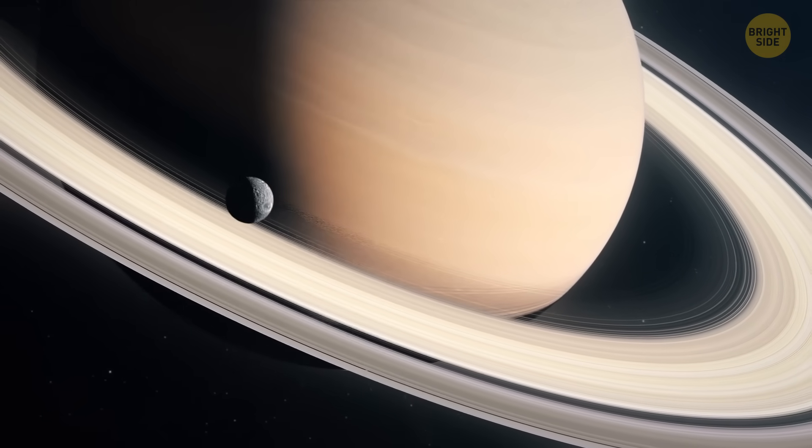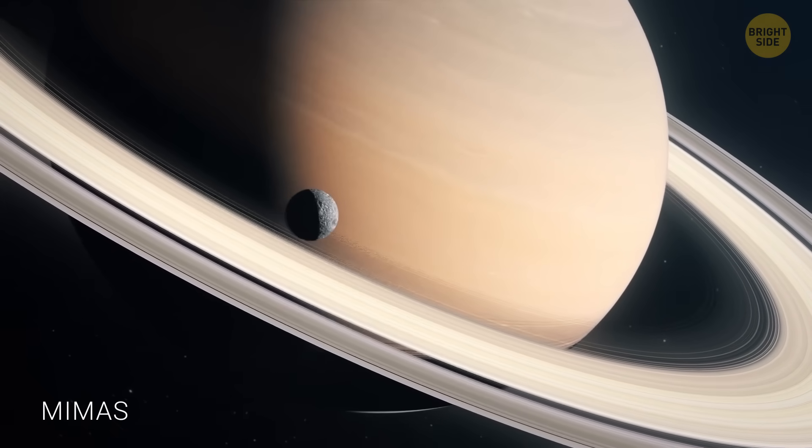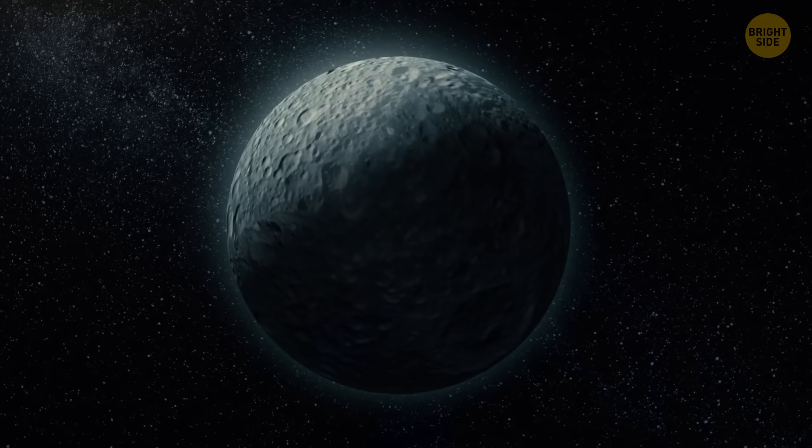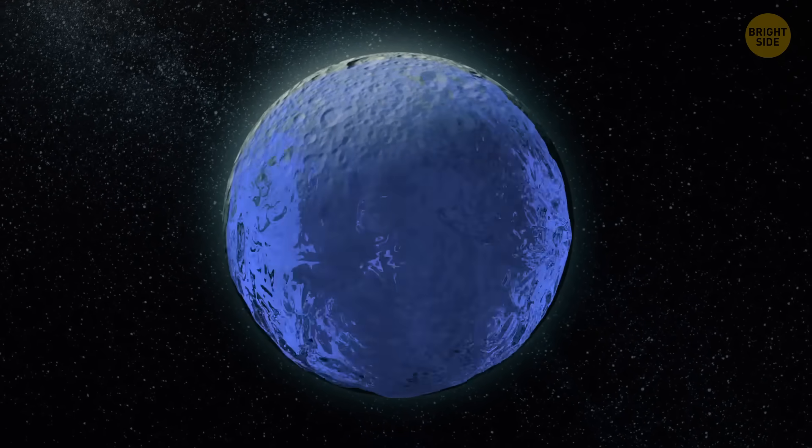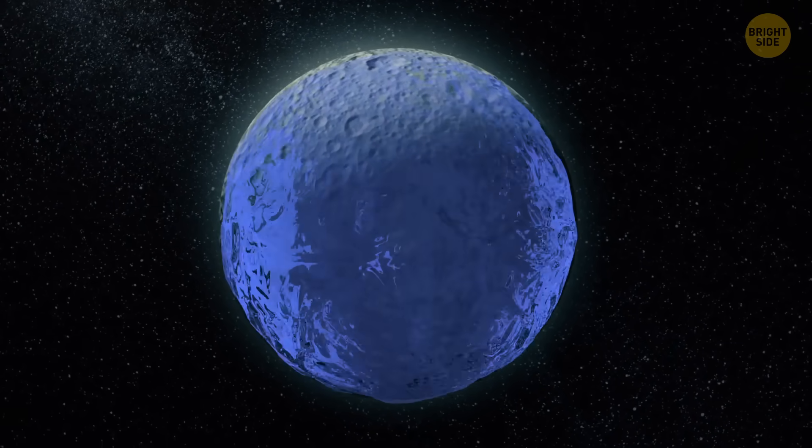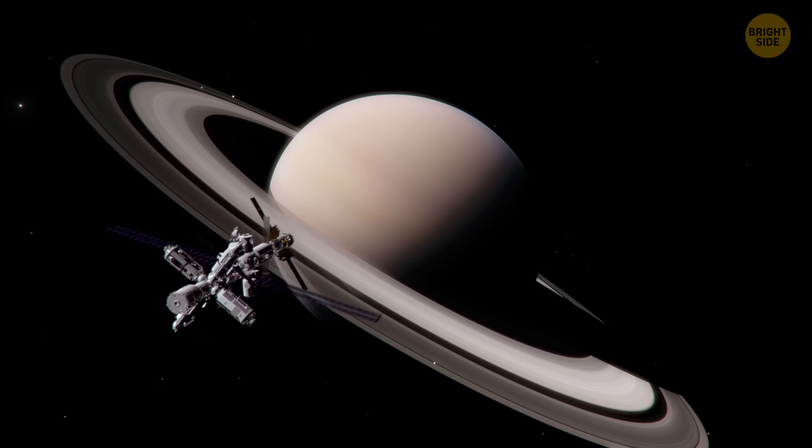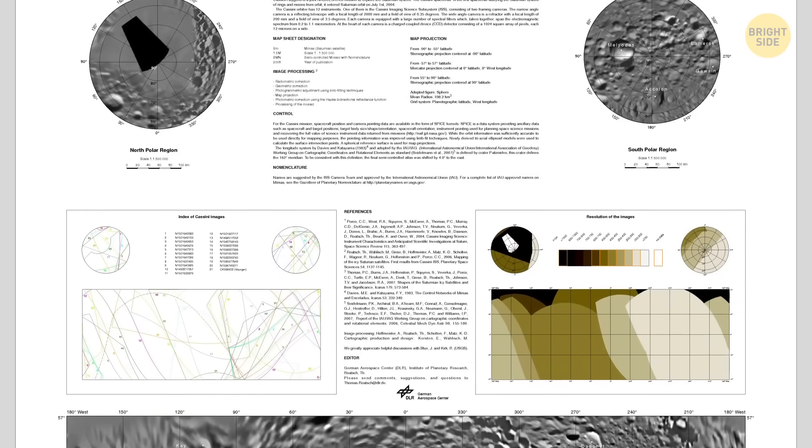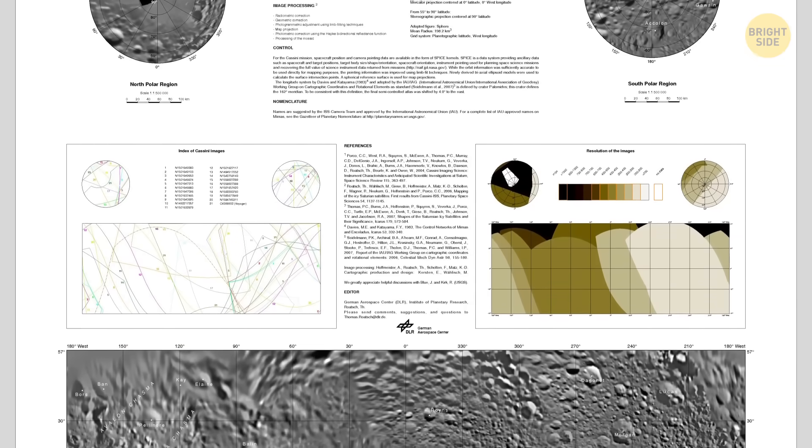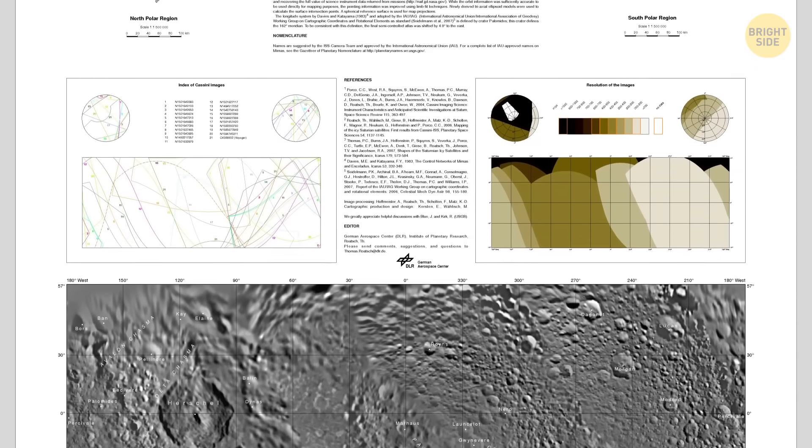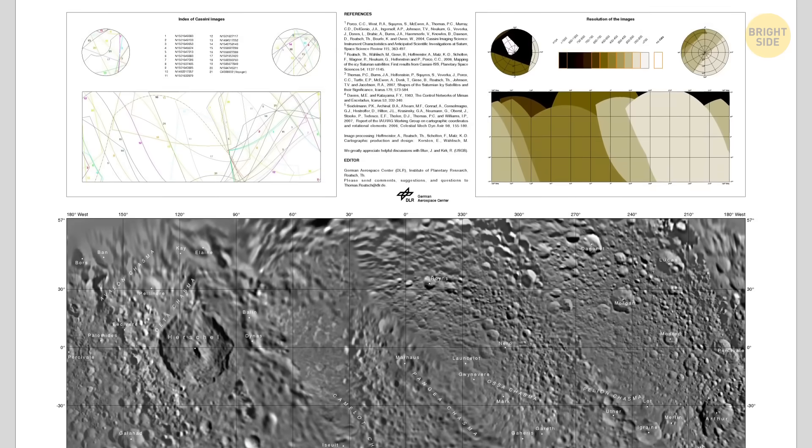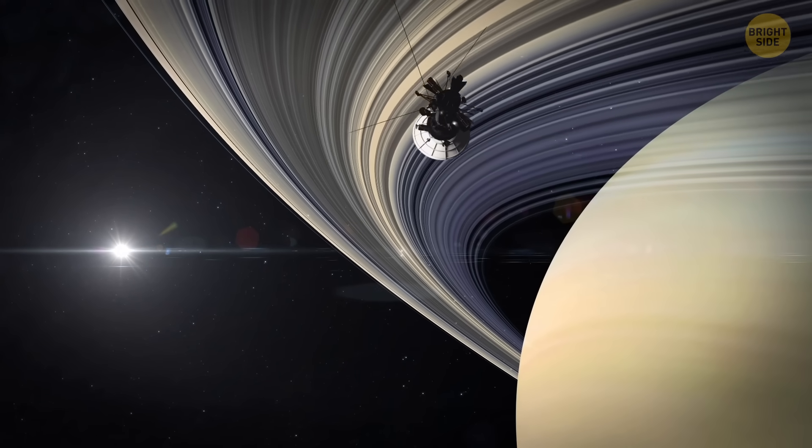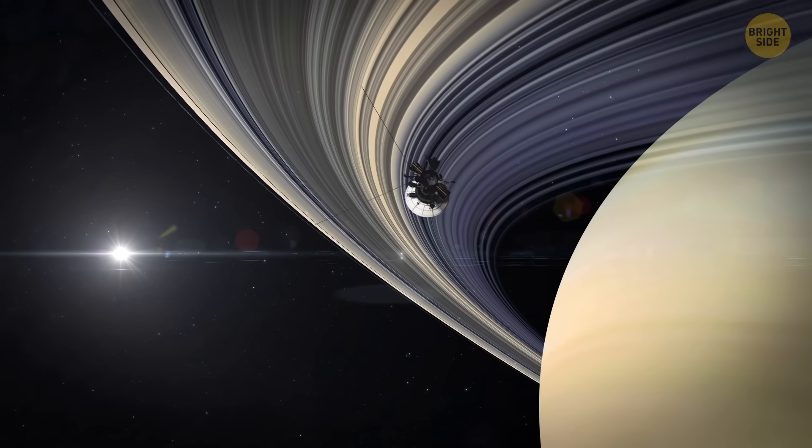Now, another destination worth checking out is Saturn's moon, Mimas. Scientists have always thought it was just a frozen rock ball. But it might be hiding a whole ocean underneath its surface, and a future spacecraft could find it. Researchers have been mapping how thick the moon's icy crust is. And those maps help them figure out how old this ocean could be and where the ice is thinnest. That's the jackpot spot for future missions to check for liquid water.